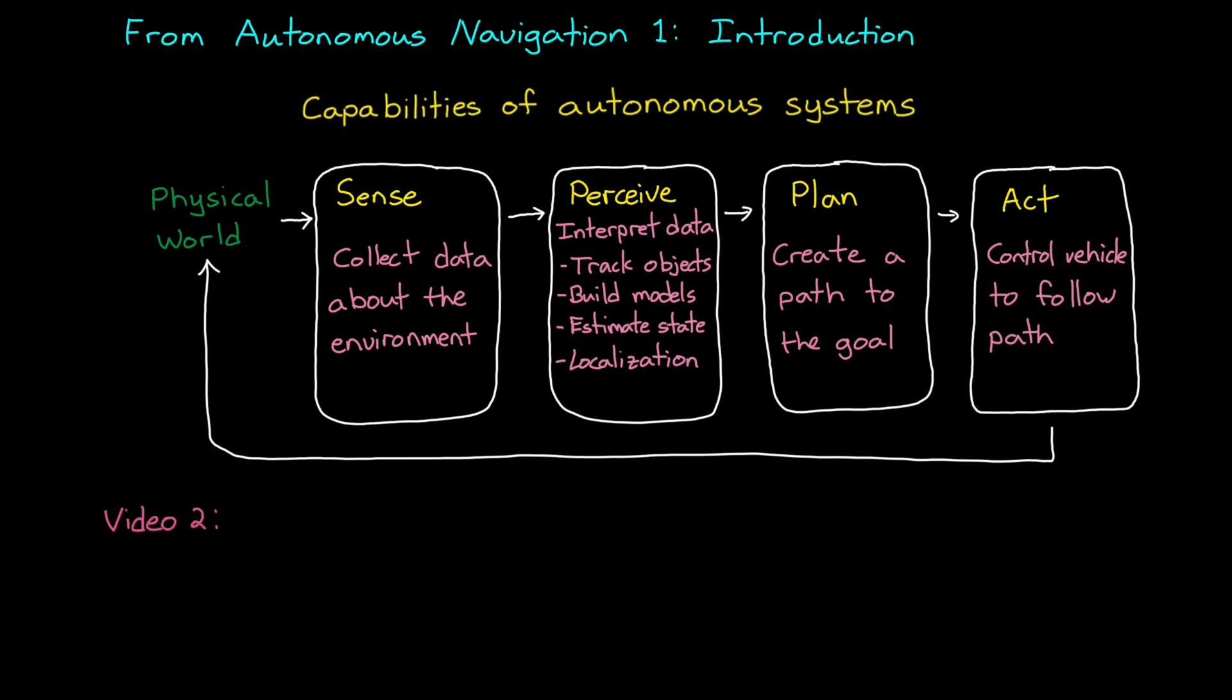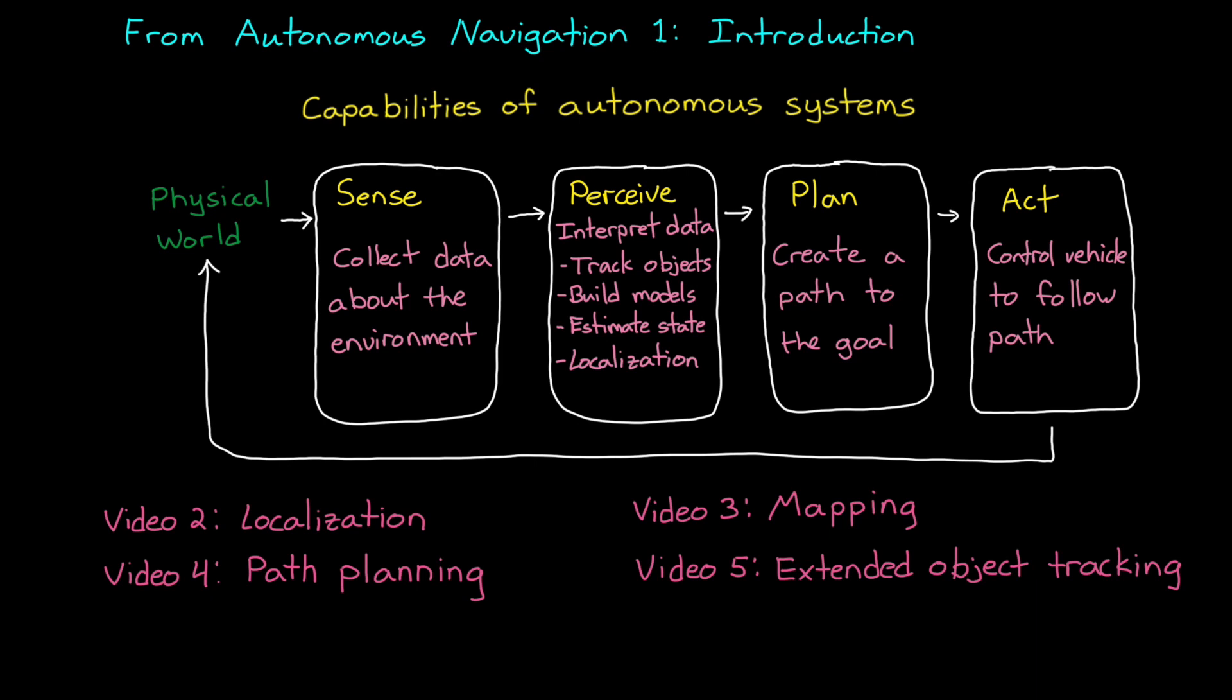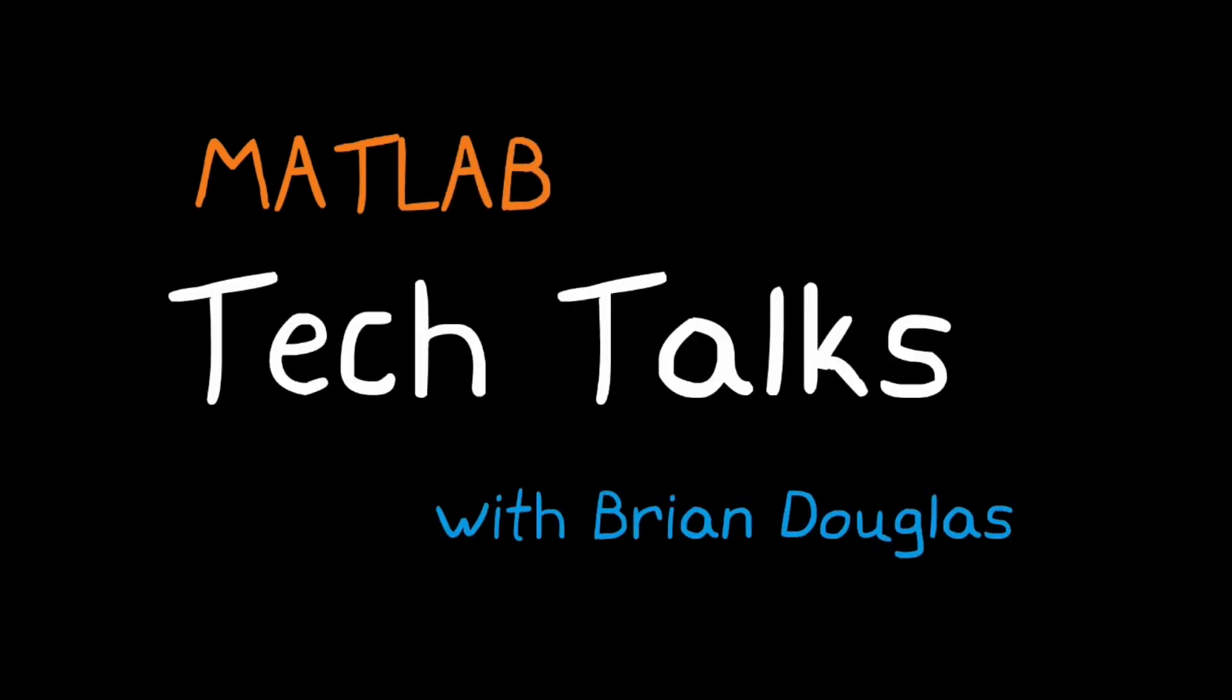Over the last few videos we covered conceptually what it means to do localization, mapping, path planning, and tracking. And now that we understand the overall system, in this video we're going to talk about the different kinds of metrics that we can use to characterize the autonomous navigation system. I hope you stick around for it. I'm Brian, and welcome to a MATLAB Tech Talk.